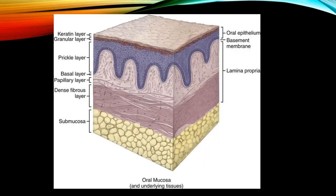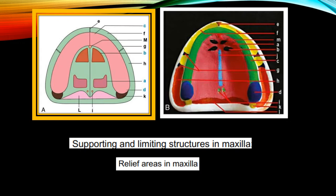Submucosa is formed by connective tissue and makes up the bulk of the mucous membrane. It varies in thickness and character from dense to loose areolar connective tissue. Now coming to the anatomic landmarks of maxilla.